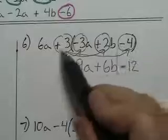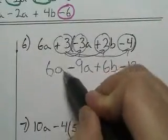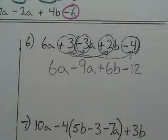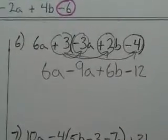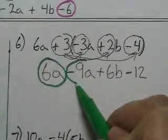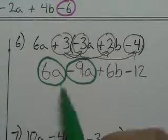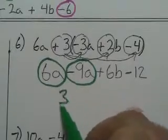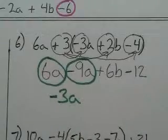Now I'll bring down — I took care of all the distributive — now I'll bring down the 6a. Now we can combine like terms. Let's put our a's together. So that's 6a and I have negative 9a. Six and negative nine — they're different signs, so you need to subtract. Nine take away six is three, 3a, and there's more negative, so it's negative 3a.